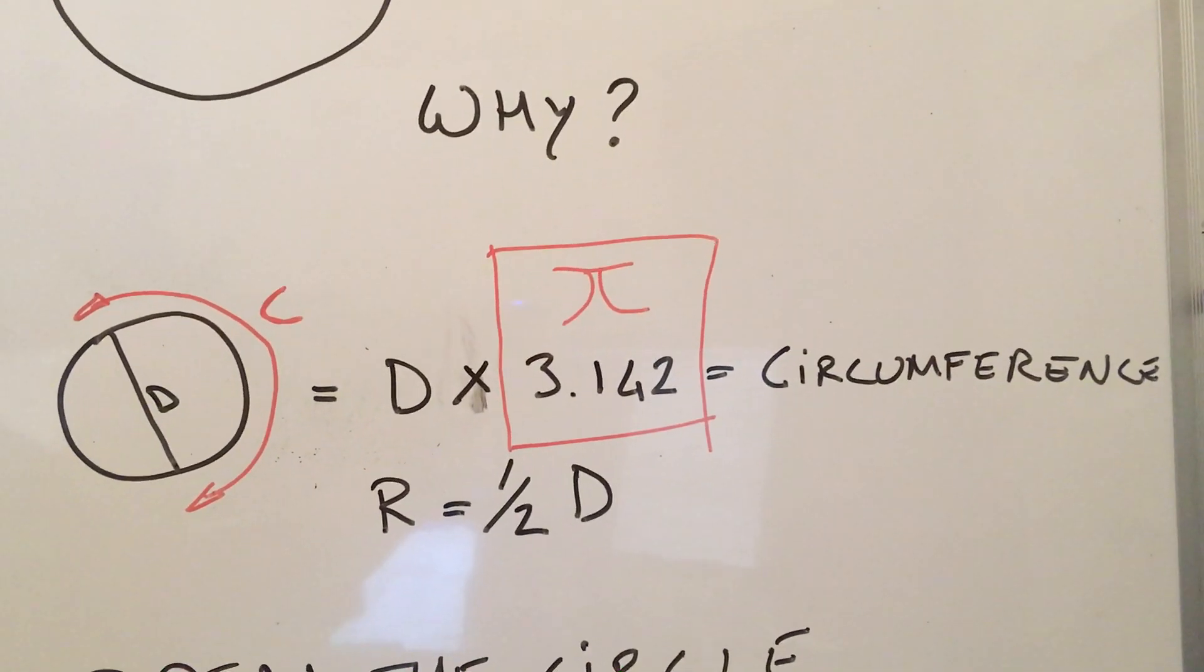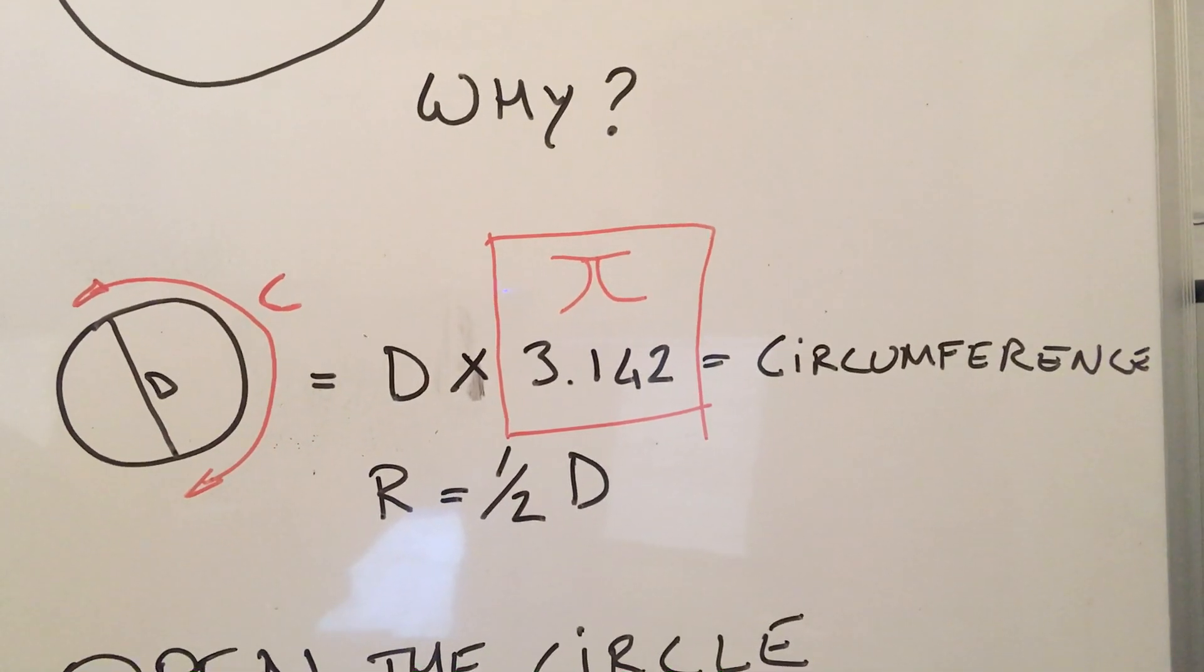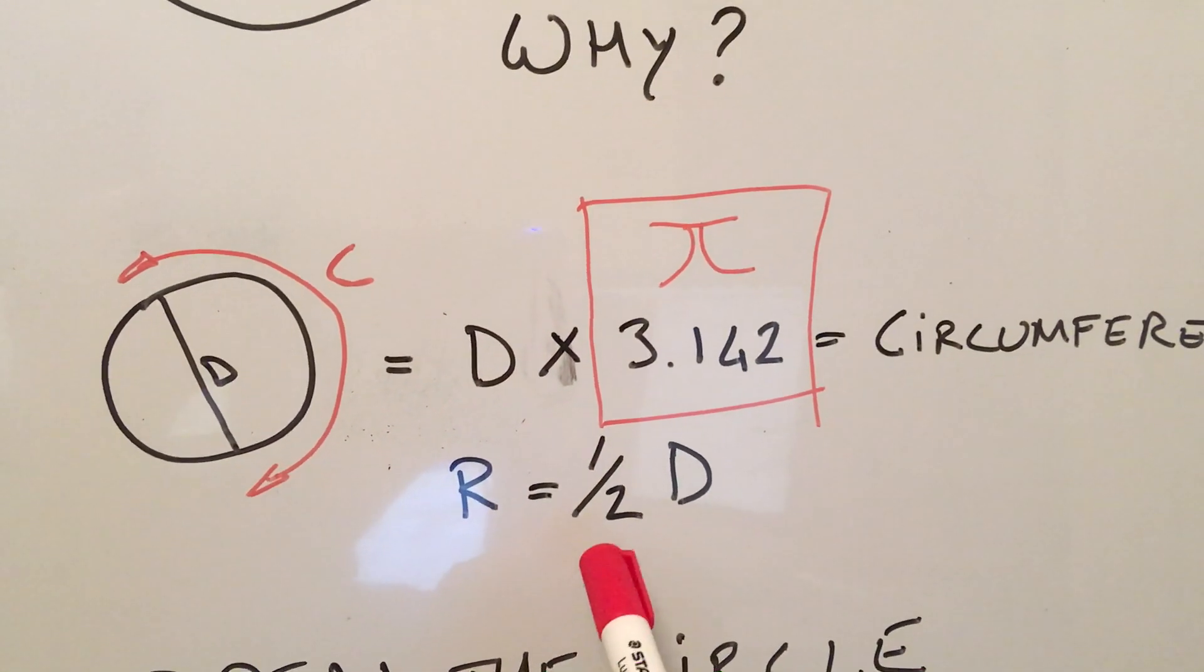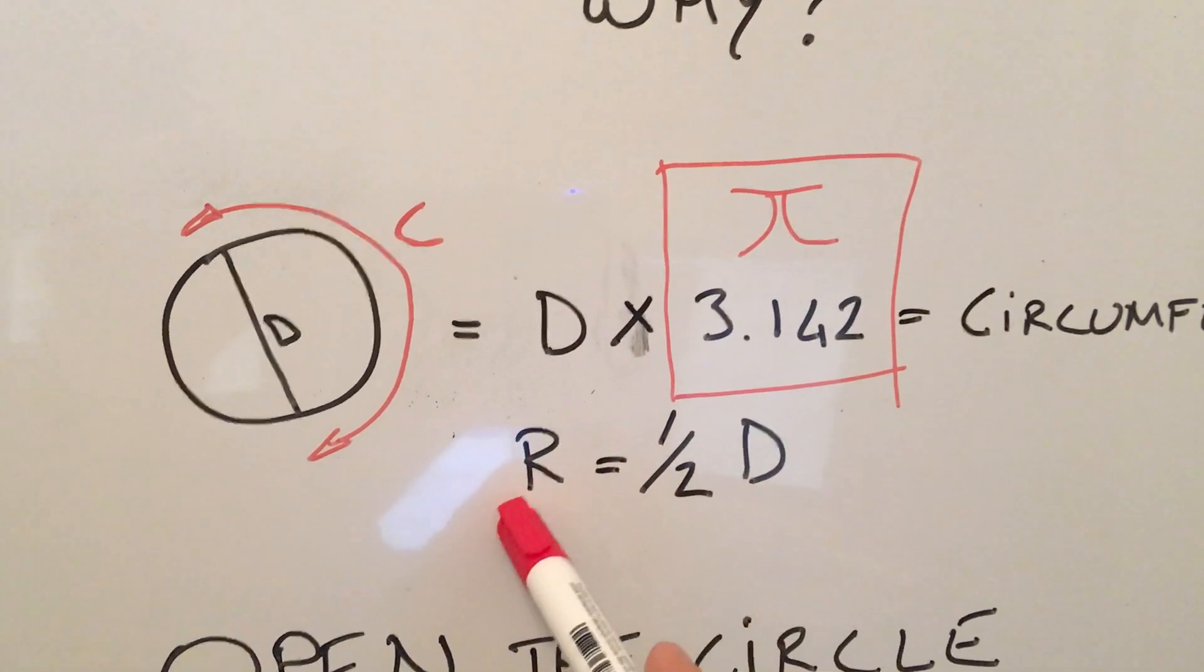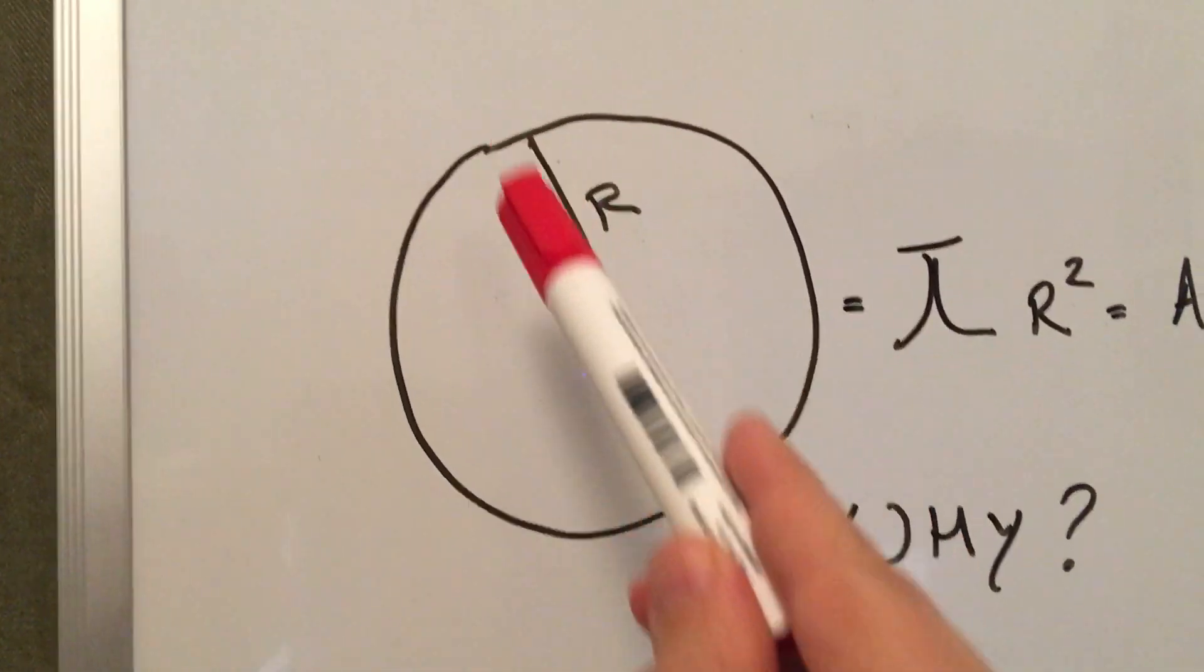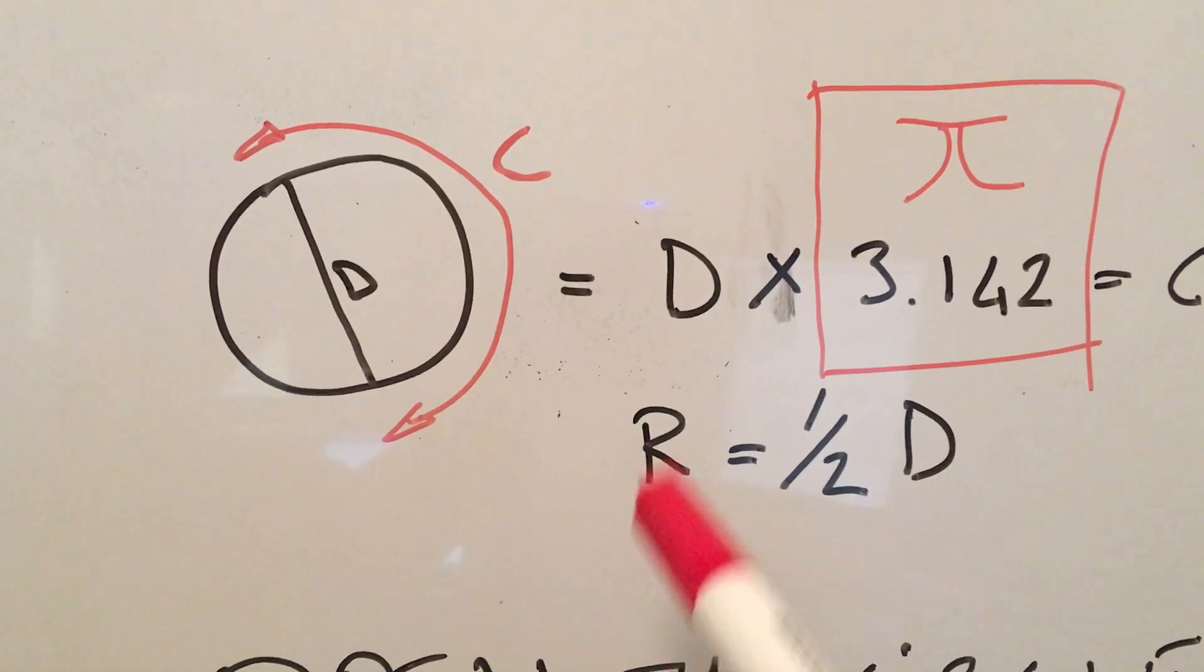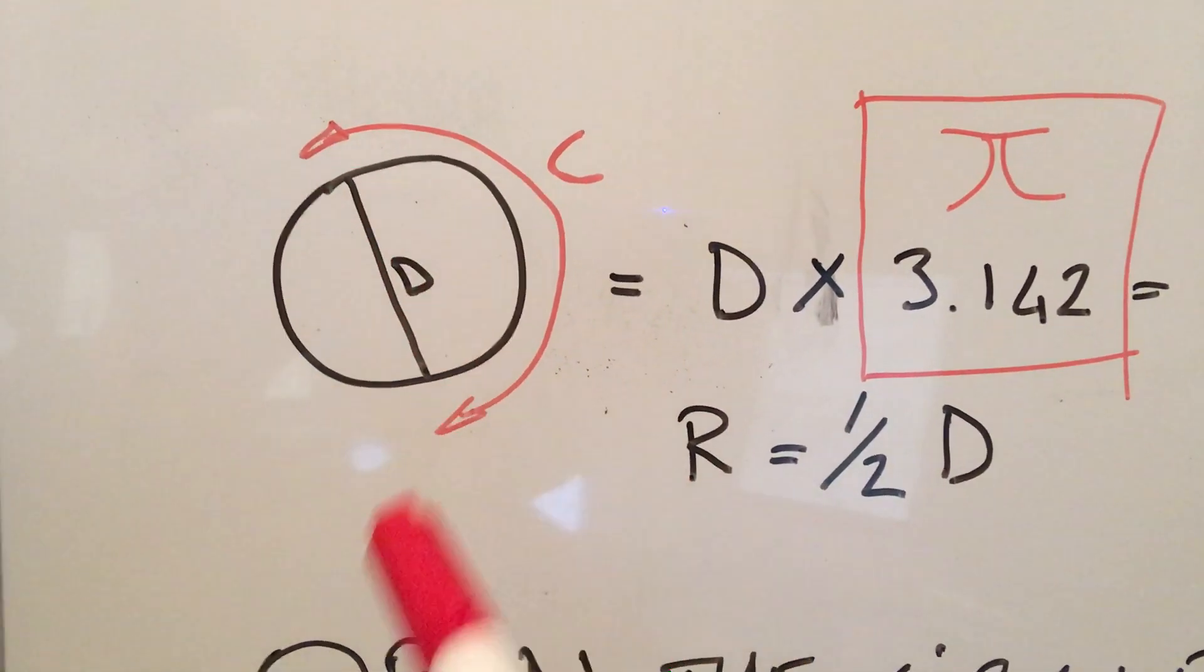Diameter is equal to, I mean, sorry, circumference is equal to the diameter multiplied by pi. Another way that you can write diameter, of course, is half, I mean, the radius, sorry, is half of the diameter. So, that's the radius, half of the diameter. So, you could write diameter as 2r, or you could write r radius as half of d, because it's half of that length.